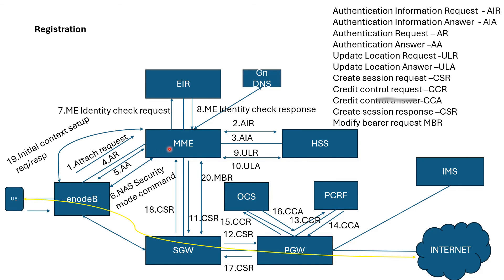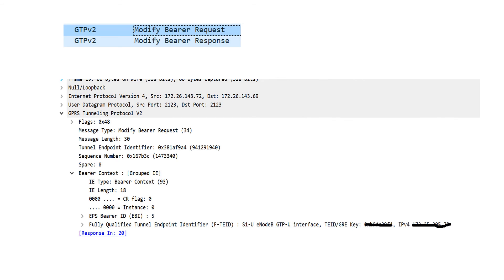Once MME receives the eNodeB tunneling end ID, it sends a Modify Bearer Request toward S-Gateway, providing the eNodeB S1U tunneling end ID. Once S-Gateway receives this, the eNodeB and S-Gateway get connected and user traffic starts flowing. S-Gateway responds with a Modify Bearer Response. After this, the user data flow proceeds from UE to S-Gateway, then P-Gateway, and out to the Internet.